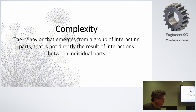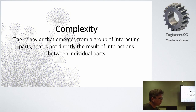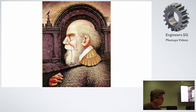Complexity — or sometimes called complexity science — is a science that talks about the behavior that emerges from a group of interacting parts, and this behavior is not directly resulting from the interactions between individual parts. One analogy I want to give is this.